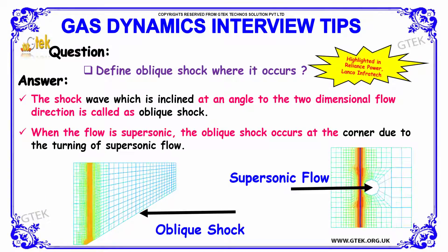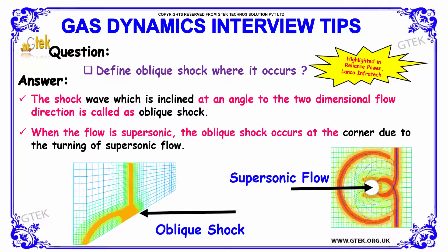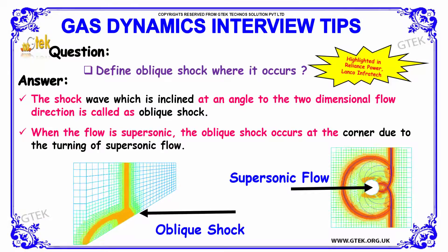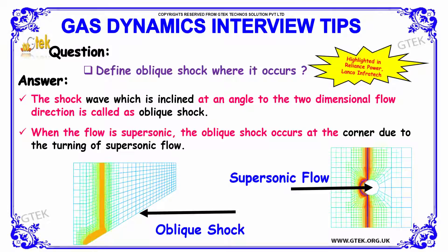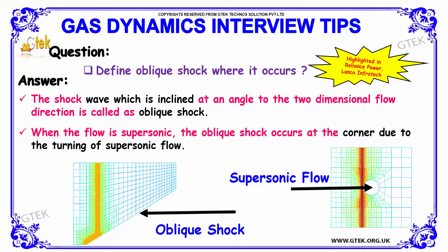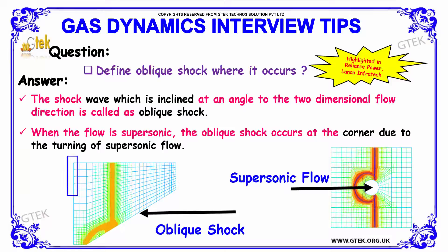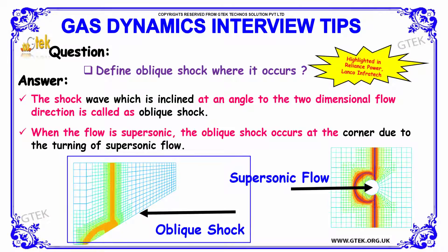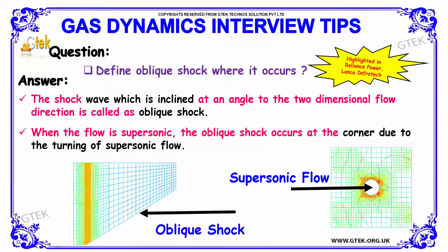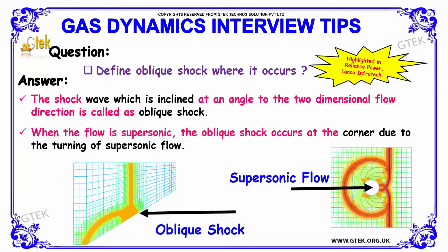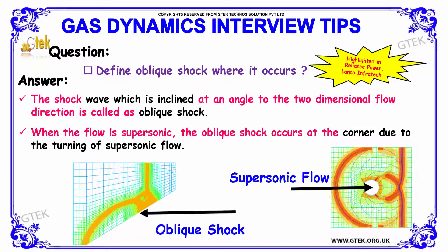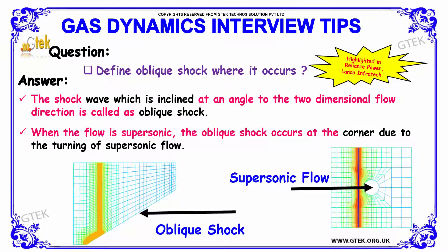Next question: define oblique shock and where it occurs. The shock wave which is inclined at an angle to the two-dimensional flow direction is called as oblique shock. You can find the oblique shock depicted here. When the flow is supersonic, the oblique shock occurs at the corner due to the turning of supersonic flow.